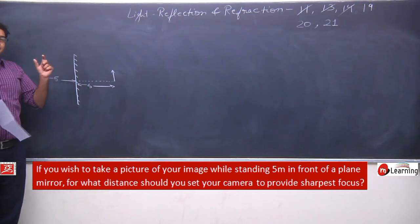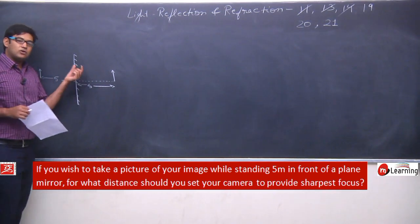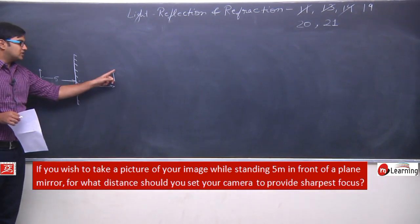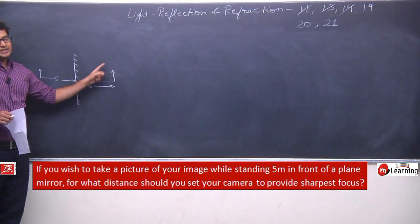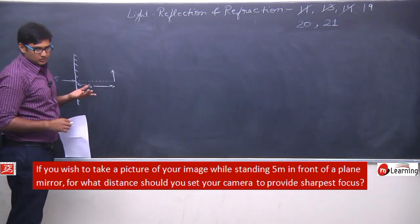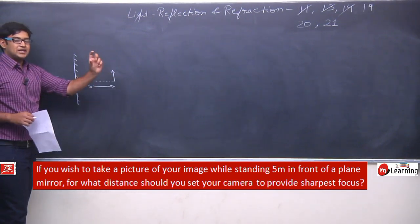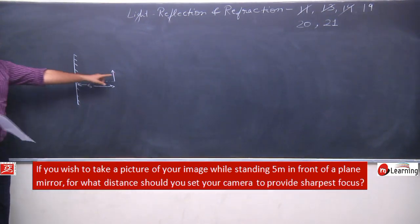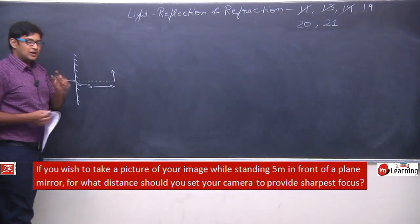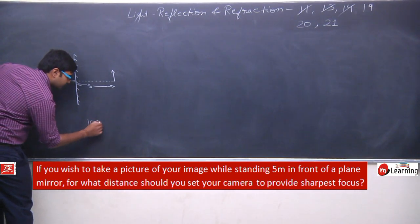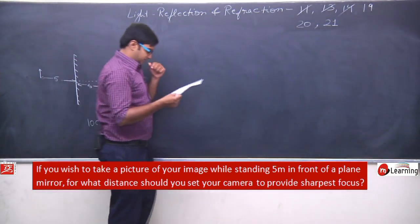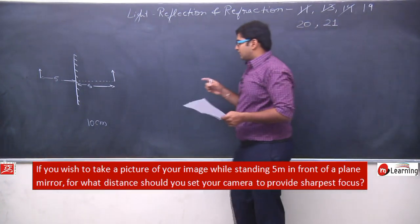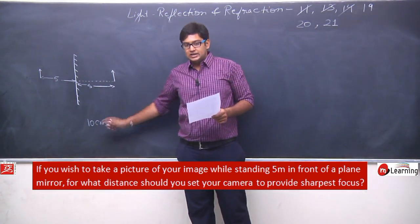The object whose picture we want to take — that image — is at 5 centimeters plus 5 centimeters from the camera. Since you want to take a photo of your image, your image becomes the object for the camera. From this point you can see the object is at 5 + 5 = 10 centimeters overall distance. For what distance should you set your camera to provide the sharpest focus? You need to focus your camera at 10 centimeters to get the sharpest focus.